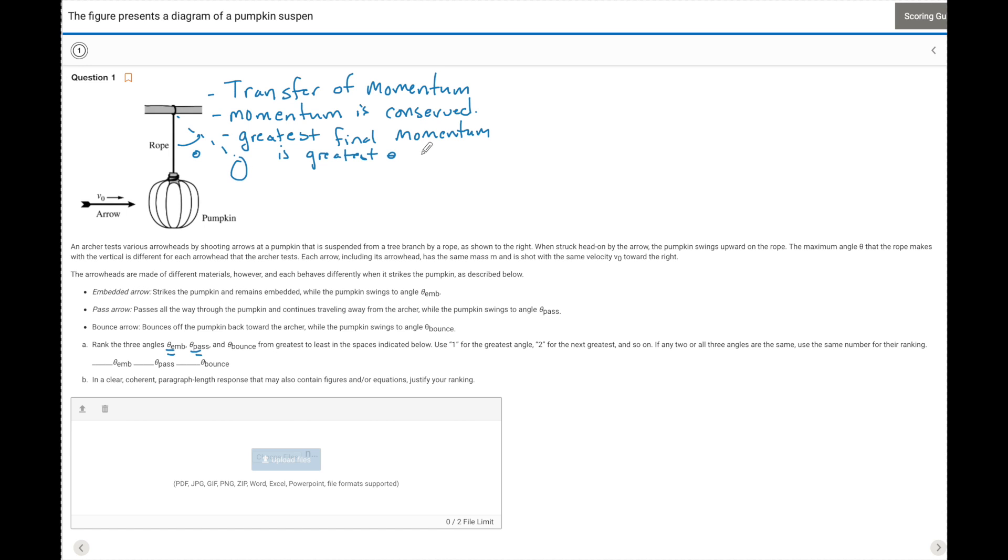And the reason for that is because the greatest final momentum has the greatest speed, and the greatest speed has the greatest kinetic energy. And the greatest kinetic energy is going to get converted into the greatest gravitational potential energy or height. So these ideas right here all have to be spoken about when explaining in a clear, coherent paragraph length response. Now, we can also add equations to prove it.